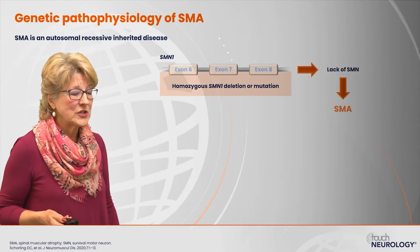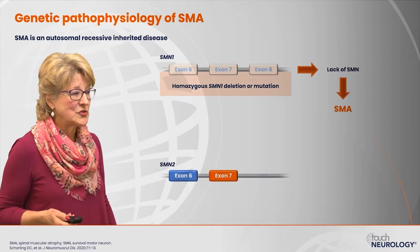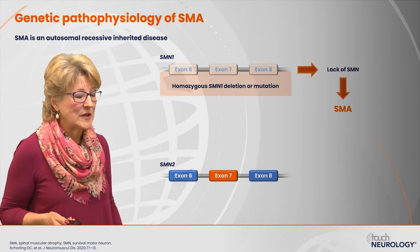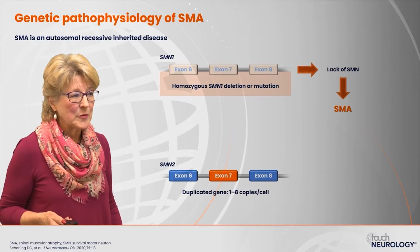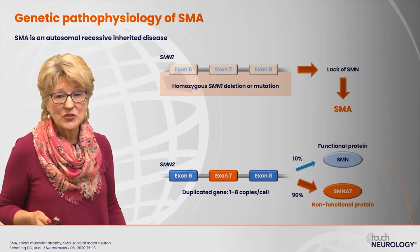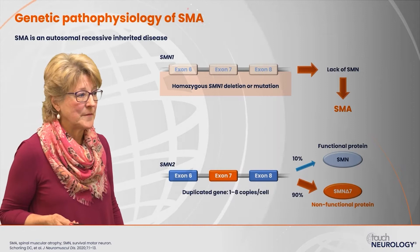Fortunately, in the majority of patients, there's a backup gene called the SMN2 gene. It's different in very subtle ways from the SMN1 gene, but typically we all have between one and eight copies of this backup gene. Because the gene works a little bit differently, unfortunately there's only about 10% of functional SMN protein that is able to be produced from that SMN2 gene.